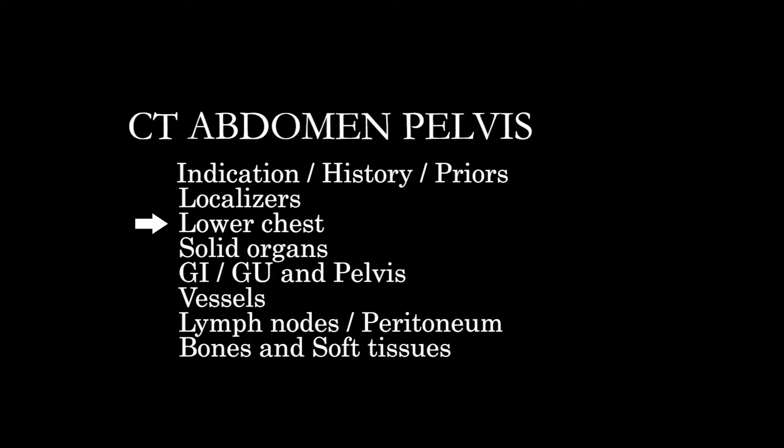The general approach I use is a quick look at incidentally imaged areas of the lower chest, including the mediastinum, heart, lower lungs, and vasculature, then moving to the solid organs in the upper abdomen into the GI system, the GU or genitourinary system, other pelvic structures, vessels, lymph nodes, the peritoneum and potential spaces, and finally everything else — the osseous structures and the soft tissues and muscular structures surrounding the abdomen and pelvis.